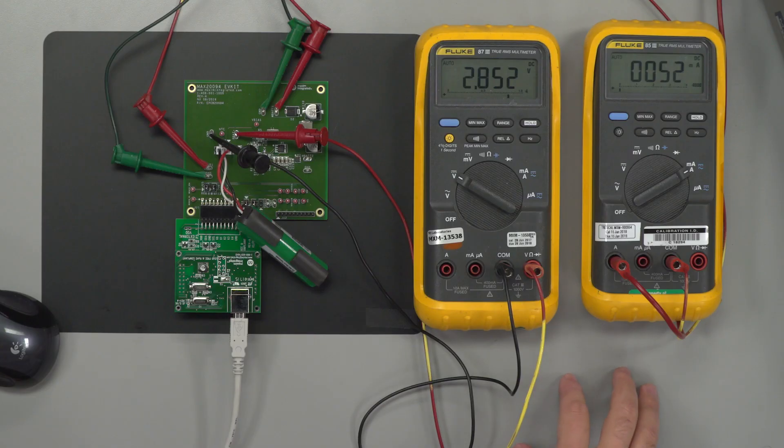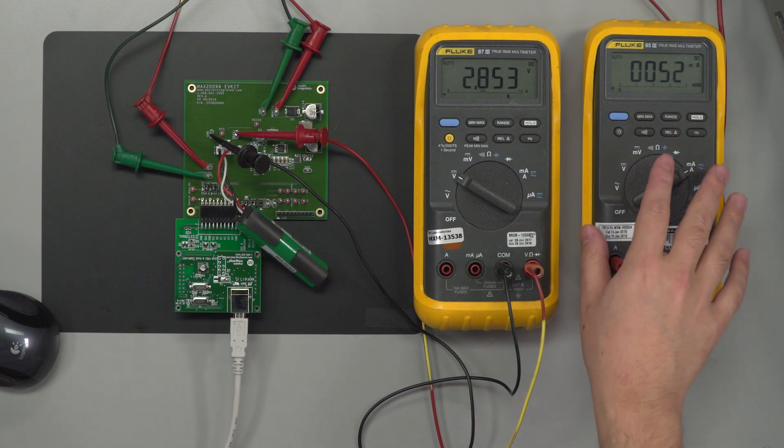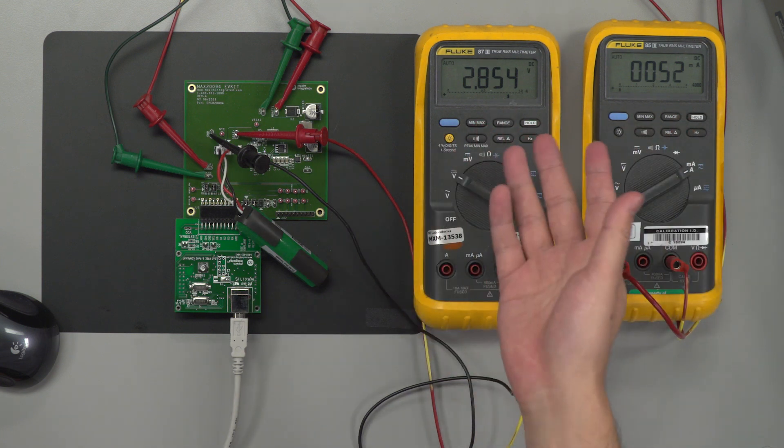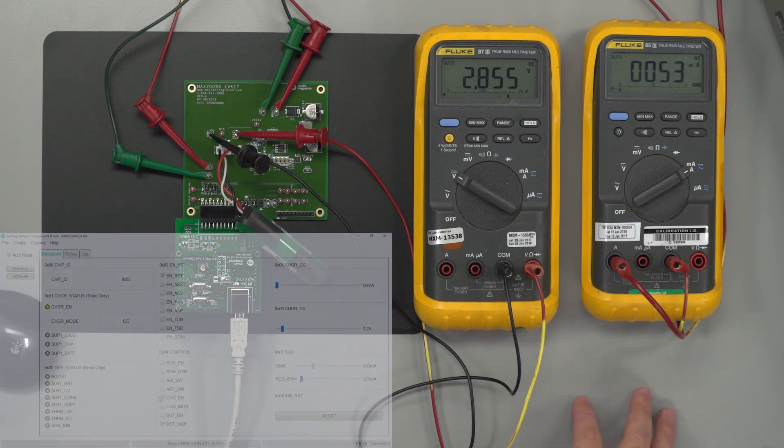Now that we've enabled the charger we see that 50 milliamps is on the current meter and that the voltage is very slowly increasing from what we saw previously and that's because 50 milliamps is not that much power.